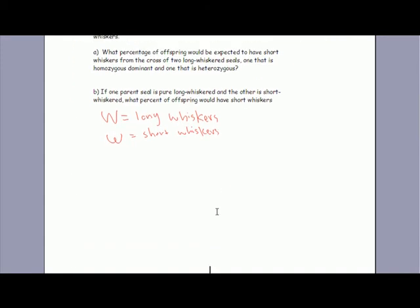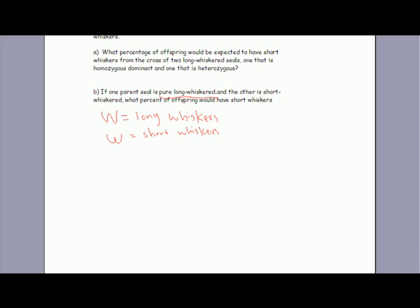So now it says we're going to do a cross. It says you have one pair that is pure long-whiskered. What do you have to be to be pure long-whiskered? What do you have to have?